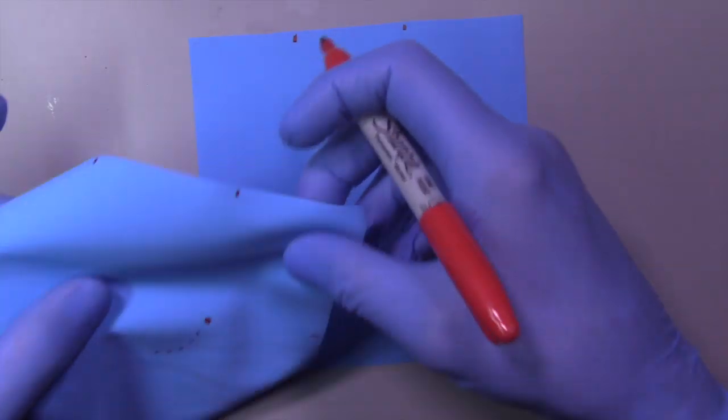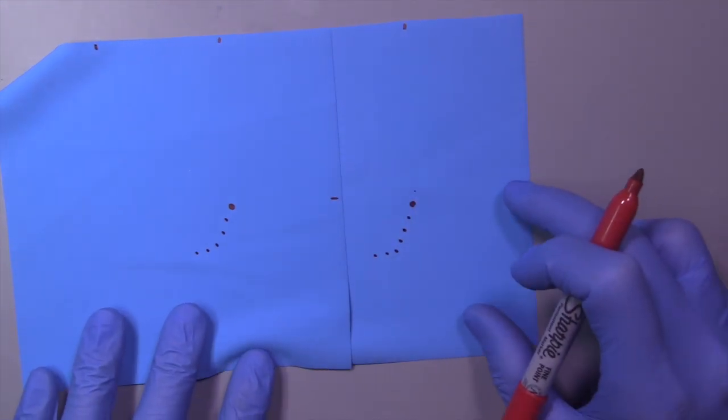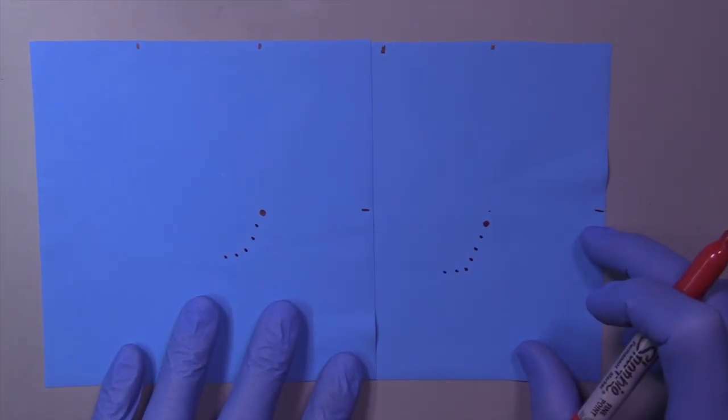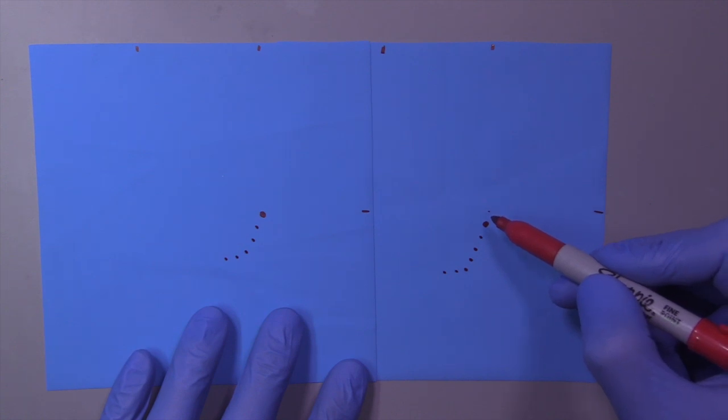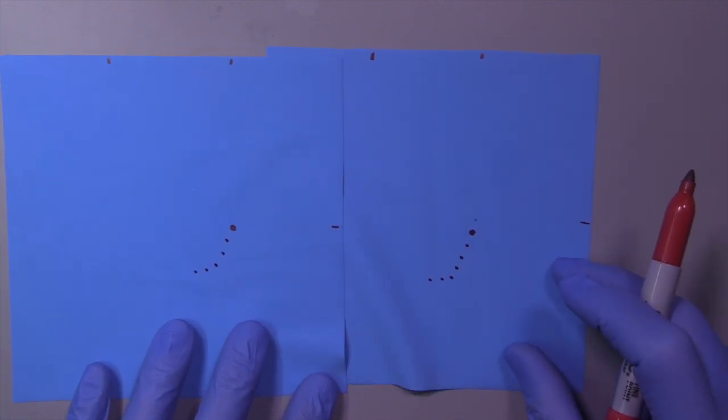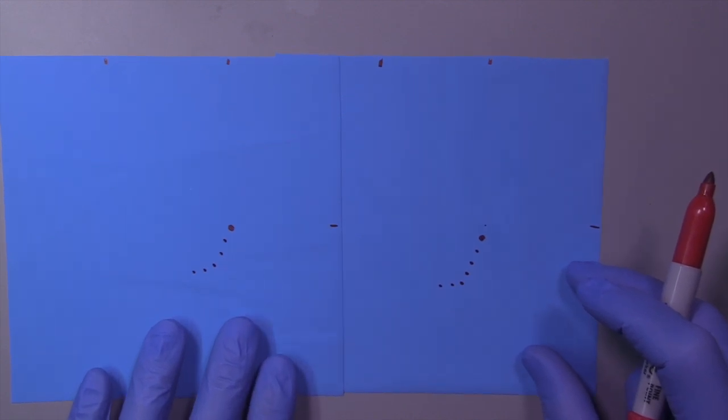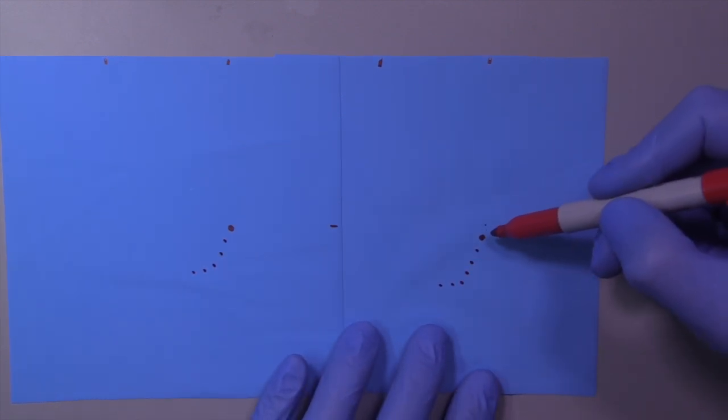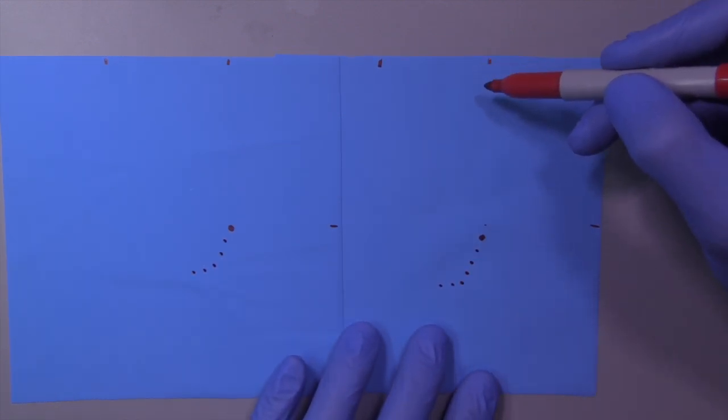Let's go ahead and hold these two rubber dams up next to each other. And on the left is the isolation from 19 to 24, and on the right is from 18 to 24. And you'll notice that the location for the hole of 19 is different quite a bit on both rubber dams.